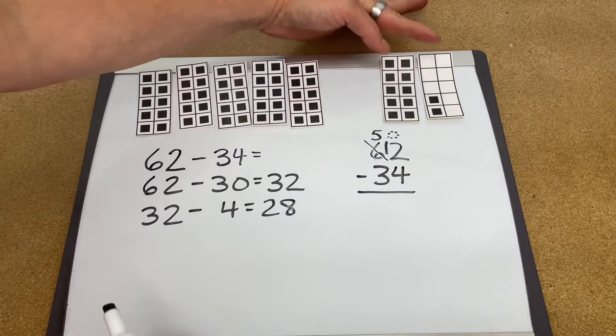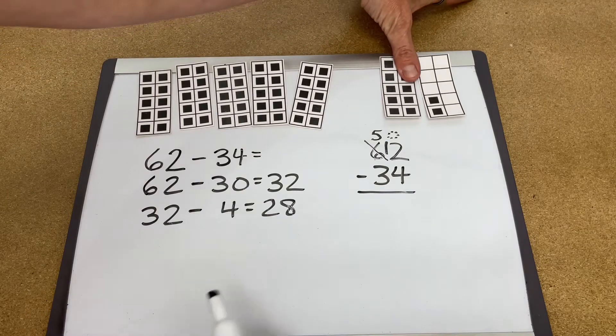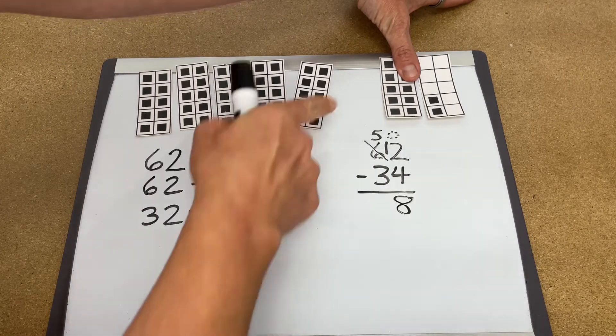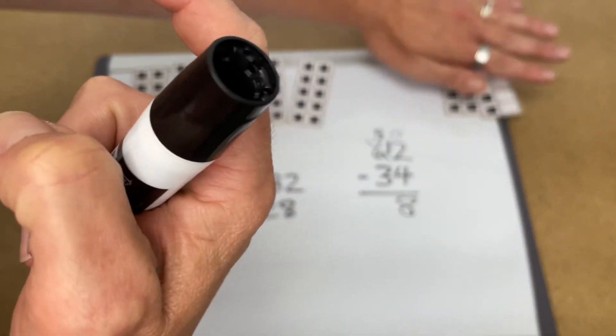Now we go 12 take away 4, leaving 8 left. So now we know we have 8 left over there.